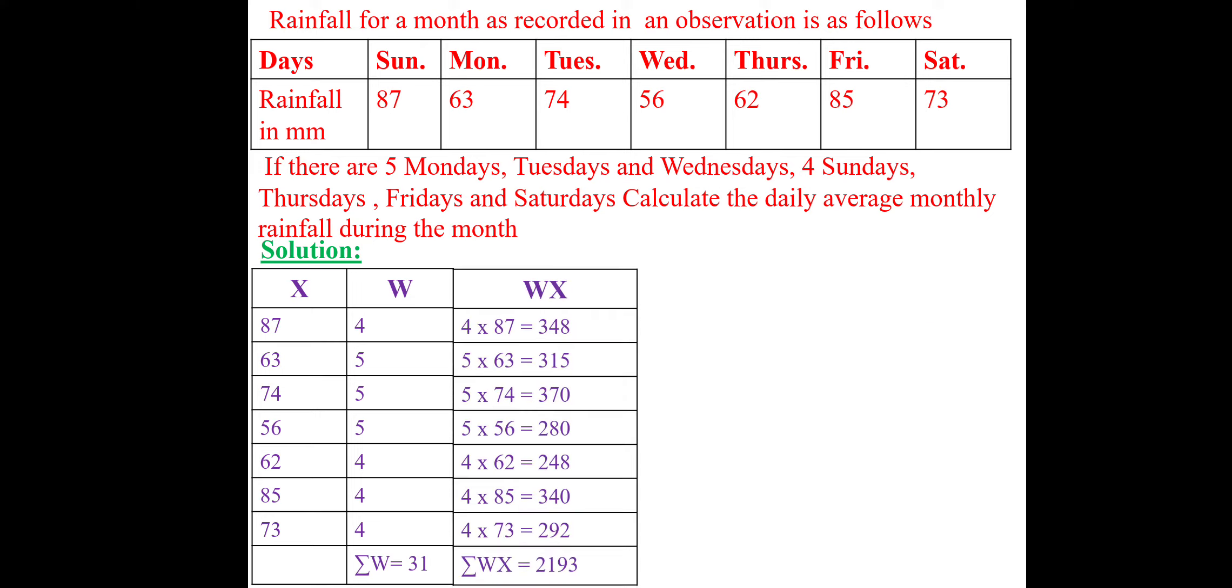Here, W into X: 4 into 87, 348. 5 into 63, 315. 5 into 74, 370. 5 into 56, 280. 4 into 62, 248. 4 into 85, 340. 4 into 73, 292. Sum of WX column equal to 2193.